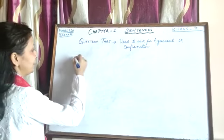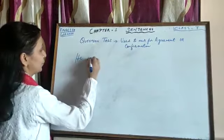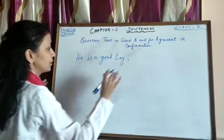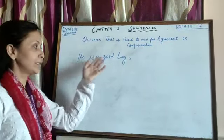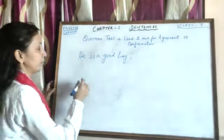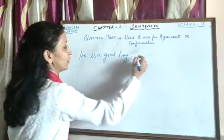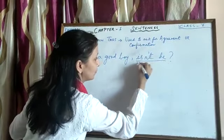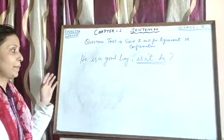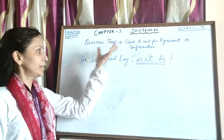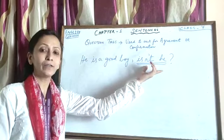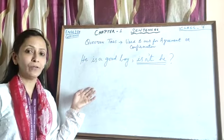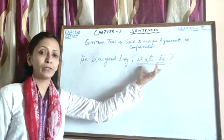Let me give you one example here. Suppose a statement is made: 'He is a good boy.' Now, this is just a statement. To make it into a question, I will add a tag to it for reconfirming the thing said here. 'He is a good boy — isn't he?' So this part of the sentence, 'isn't he,' is called the question tag. The statement is made by someone, and the tag is used for confirming it. This kind of sentence is called interrogative, and this part is called the question tag.